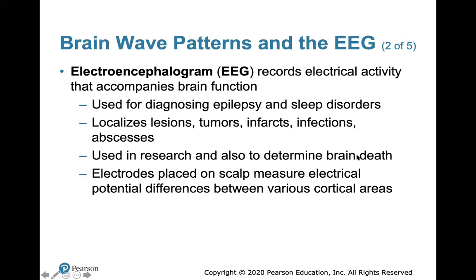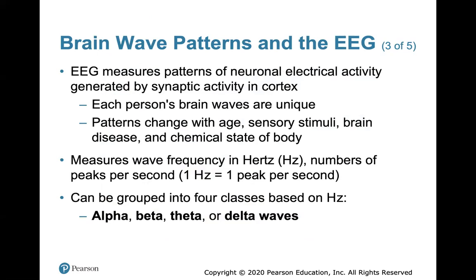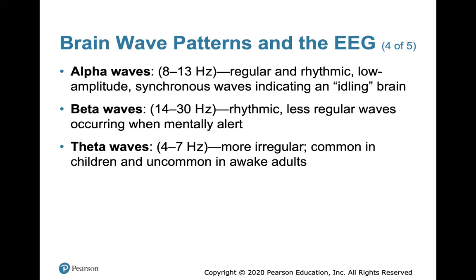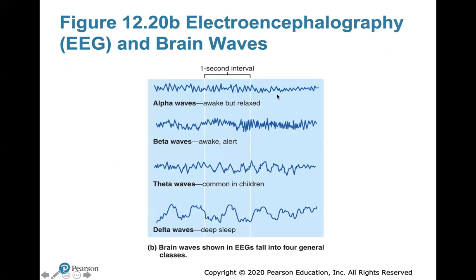To be medically dead, the brain will not emit any electrical activity — that's the medical definition of death. To take an EEG, electrodes are placed on the scalp to measure electrical potential differences between various cortical areas. The EEG measures patterns of neuronal electrical activity generated by synaptic activity. Each person's brain waves are unique and can change with age, brain disease, and the chemical state of the body. Waves are measured in hertz and grouped into four classes: alpha, beta, theta, and delta. You don't need to know the different types of waves.